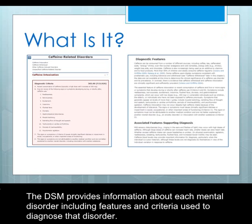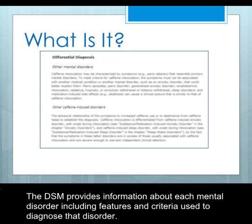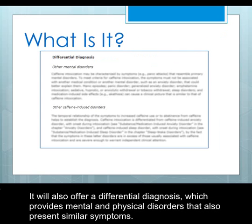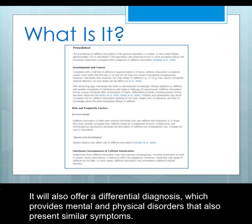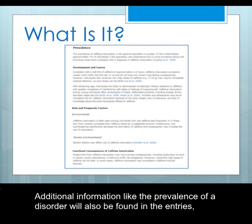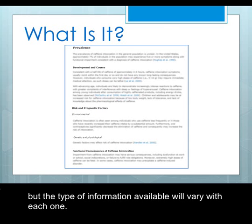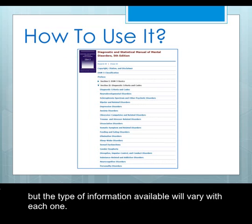The DSM provides information about each mental disorder, including features and criteria used to diagnose that disorder. It will also offer a differential diagnosis, which provides mental and physical disorders that also present similar symptoms. Additional information, like the prevalence of a disorder, will also be found in the entries, but the type of information available will vary with each one.